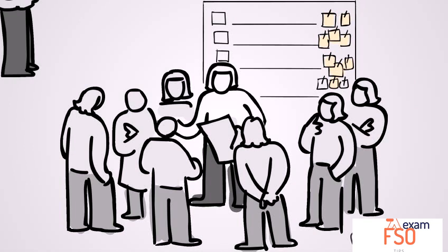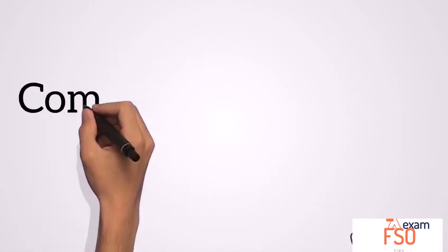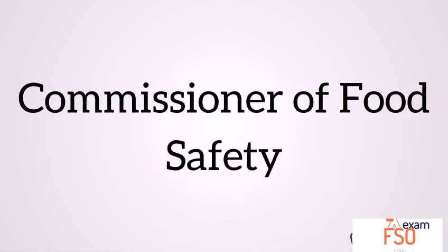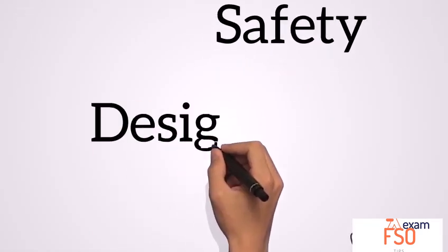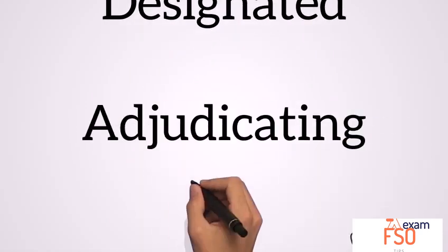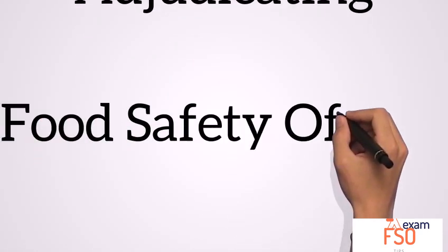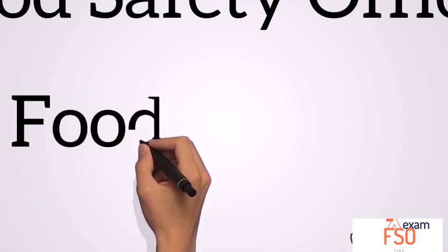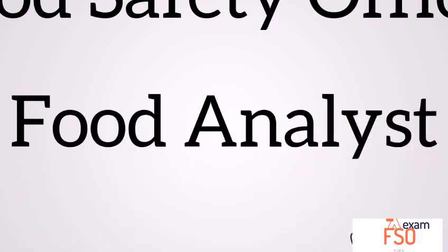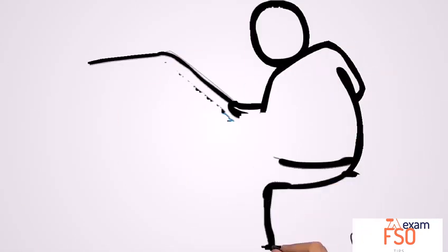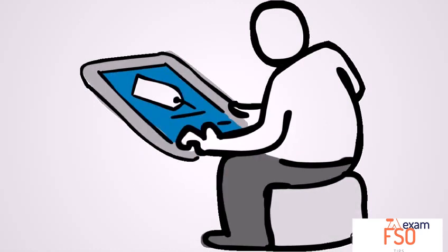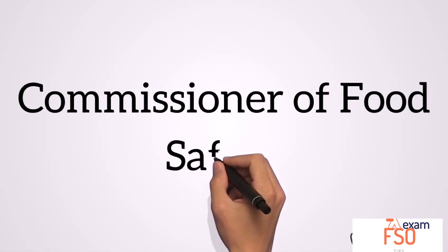Food authority of state or union territories are commissioner of food safety, designated officer, adjudicating officer, food safety officer, and food analyst. Now let's try to understand each of them in details.